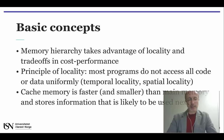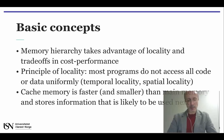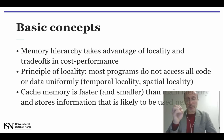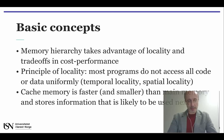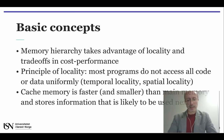Temporal locality states that a data item used at any given moment will tend to be reused again soon. And spatial locality states that the next data item is probably located closely to the one that has just been used. So we can speed up the execution of a program if the CPU accesses a faster and smaller cache memory instead of accessing the slower and larger main memory.